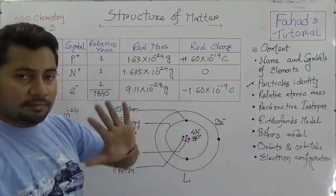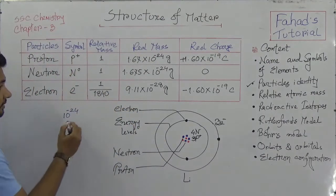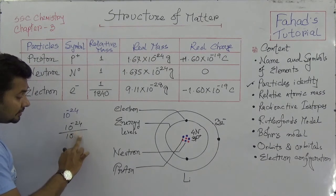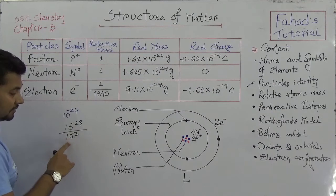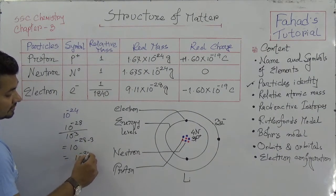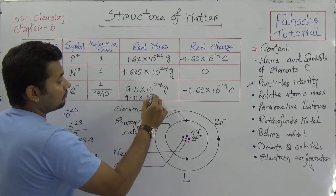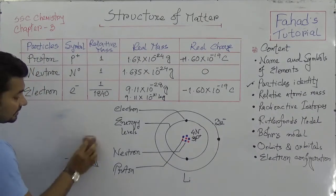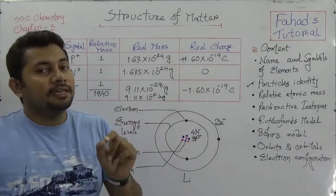If there is an MCQ asking for the mass of an electron in kilograms: since grams to kilograms involves dividing by 1000, that means shifting the exponent by 10⁻³. So if the mass is 10⁻²⁸ grams, dividing by 1000 gives 10⁻³¹ kg. Therefore the mass of an electron in kilograms is 9.11×10⁻³¹ kg. You must remember this — if an MCQ or calculation requires the mass of an electron in kg, use 9.11×10⁻³¹ kg.